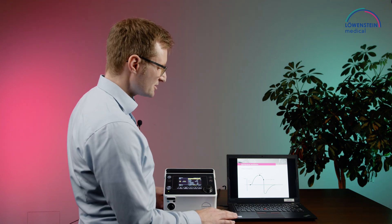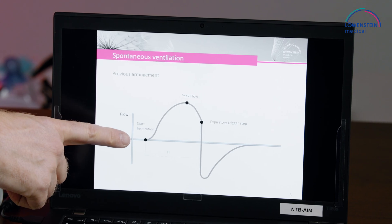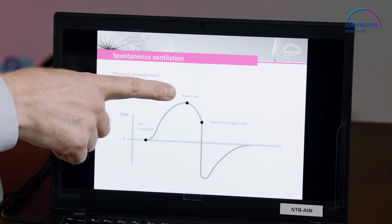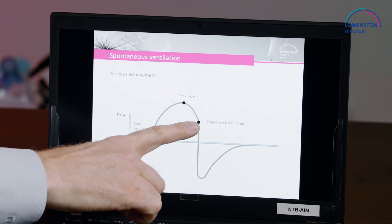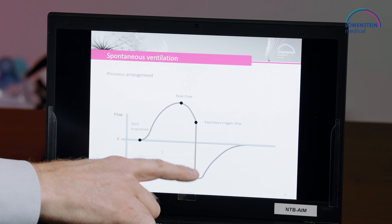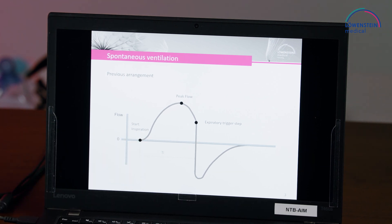Let's have a look at the presentation. This is the inspiration here with the peak flow and the cycling into expiration determined by the expiratory trigger step. What we can see is that the expiratory trigger step is always a part of or is dependent on the peak flow.